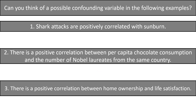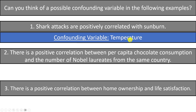Here are more examples. Shark attacks are positively correlated with sunburn — on days with more shark attacks, there also tend to be more sunburns. Is it that sharks are causing sunburn? No. The confounding variable is temperature: warmer weather brings more people to the beach, increasing both sunburn exposure and the likelihood of shark encounters. It's not one causing the other — temperature is causing both.